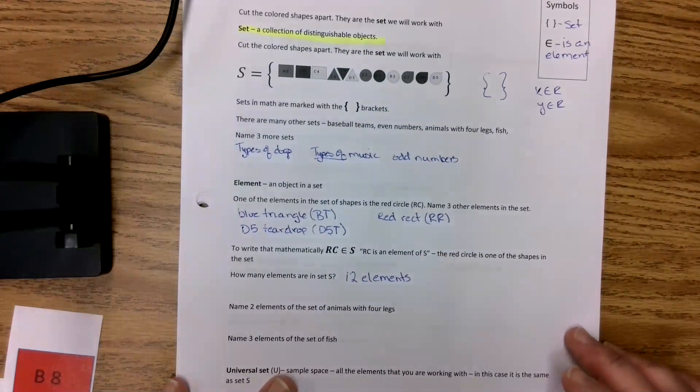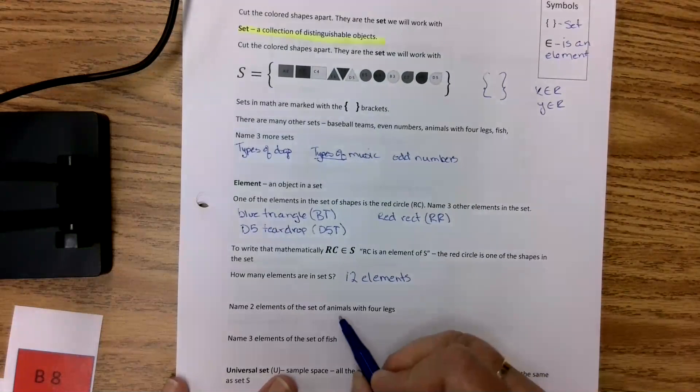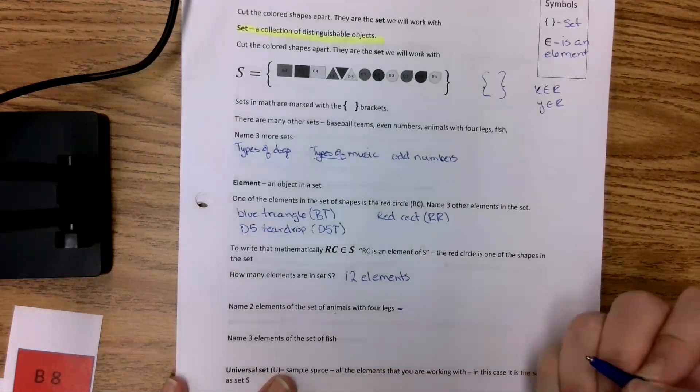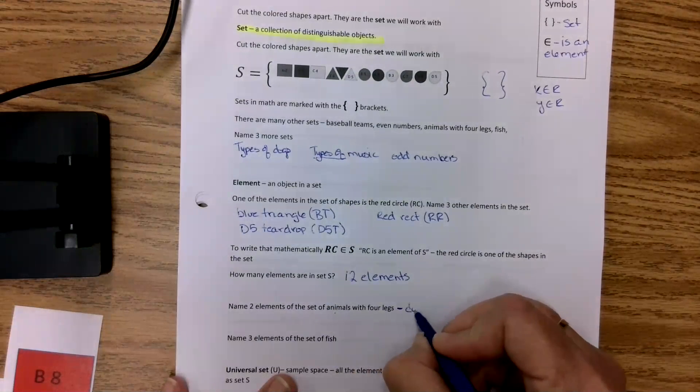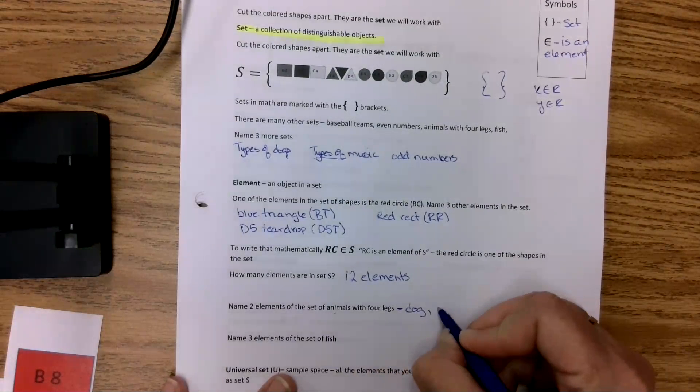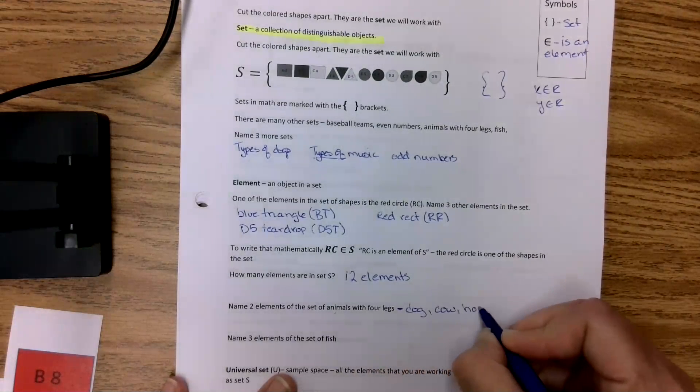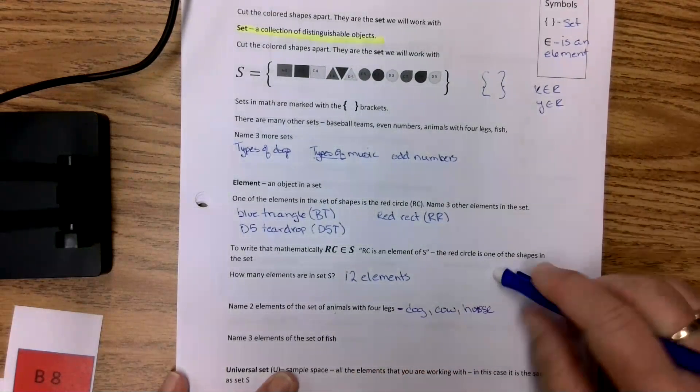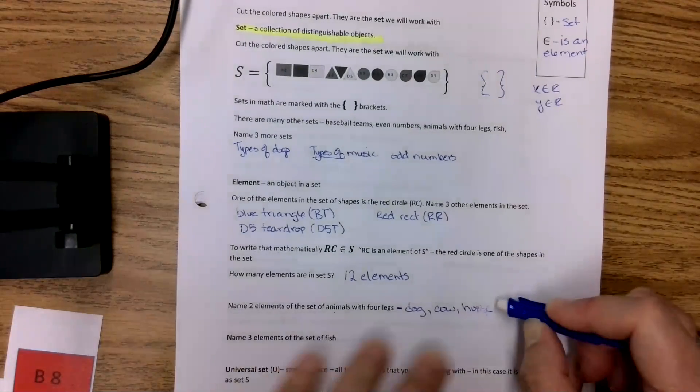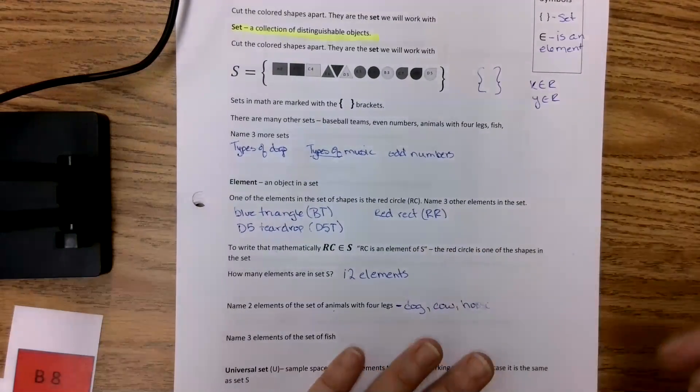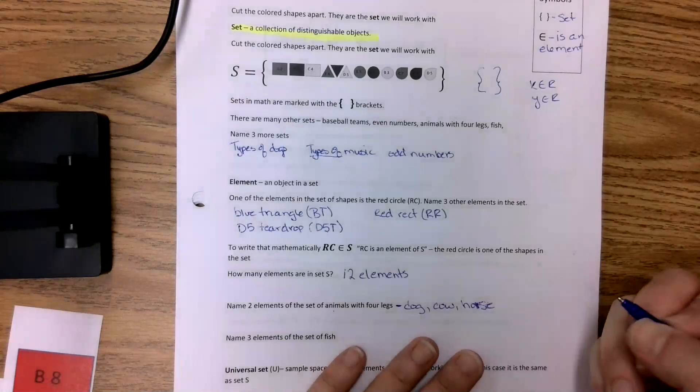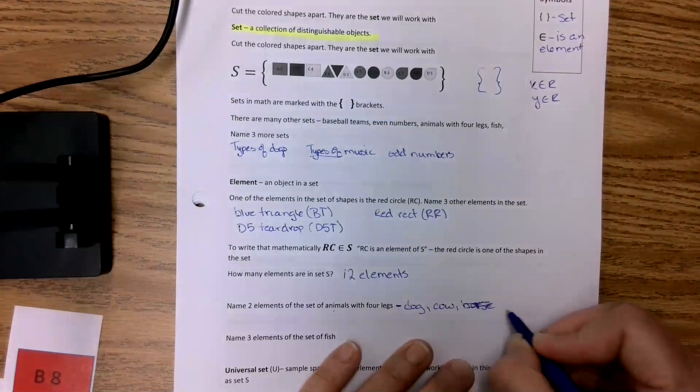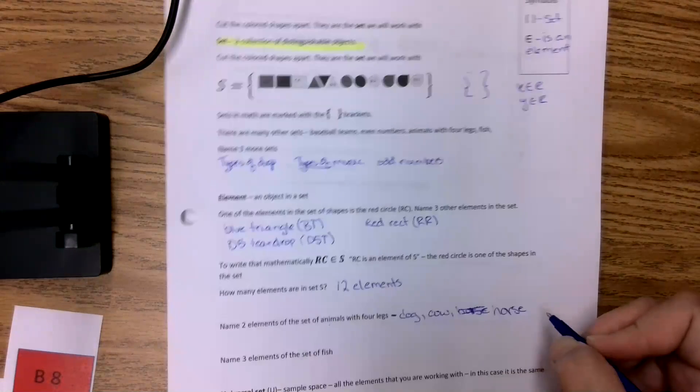All right. Some random questions. Name two elements of the set of animals with four legs. You can name any animal with four legs. So I'm going to say a dog, how about a cow, a horse. These pens aren't as cool as I thought they were. I went and bought fancy erasable pens. Never mind. Horse.